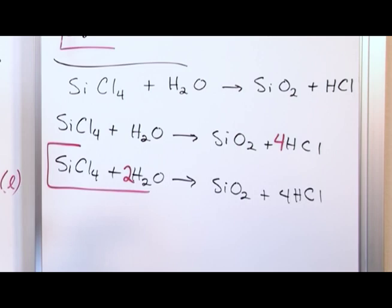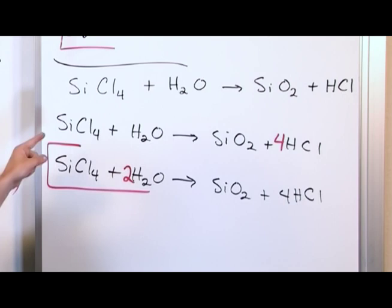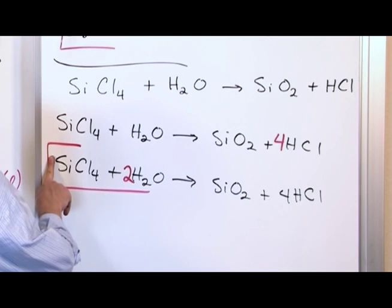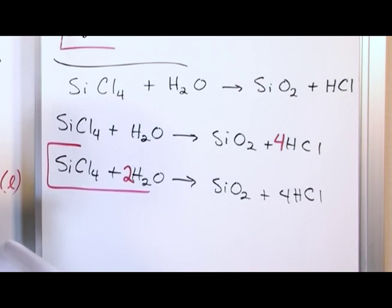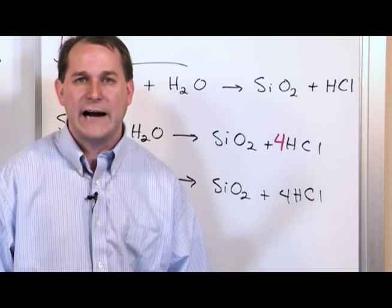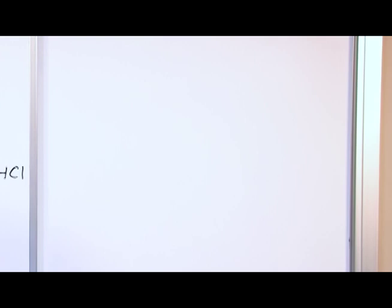What this means is one mole of silicon chloride reacts with two moles of water to yield one mole of silicon dioxide and four moles of HCl — hydrochloric acid, a very powerful acid. Go line by line, step by step — don't take anything for granted. If you start changing coefficients and don't check everything every single time, you will make a mistake.